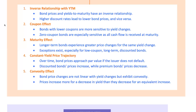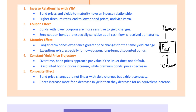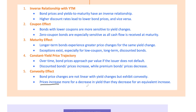Now on to the constant yield price trajectory and convexity. Even if market yields remain constant, bond prices change over time — this is known as the constant yield price trajectory. If a bond is issued at a discount, its price will rise towards par as it approaches maturity. If it's issued at a premium, its price will fall towards par. The relationship between bond prices and yields isn't linear — it's convex. This means bond prices increase more for a decrease in yield than they decrease for an equivalent increase in yield. This is great for bond investors: when yields drop, your bond's price jumps up higher than it would fall if yields rose.